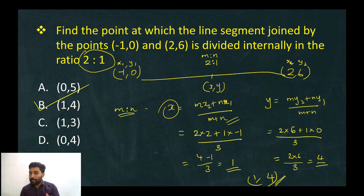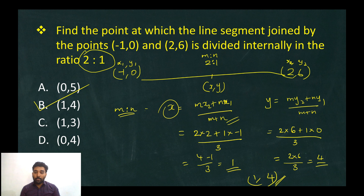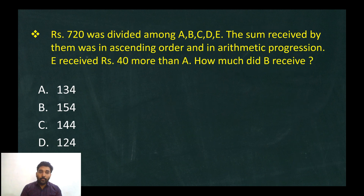Using the section formula with y1 and m plus n, the answer is the point 1 comma 4.